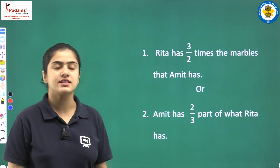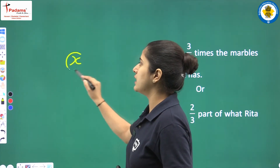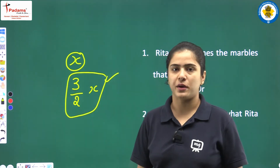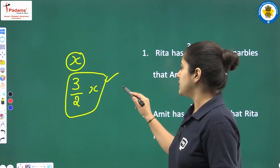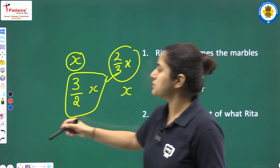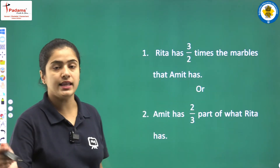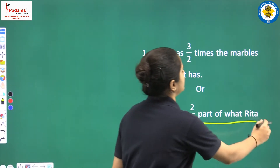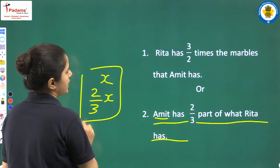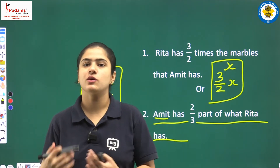Next example: Rita has three upon two times the marbles that Amir has. So if Amir has x marbles, then Rita has (3/2)x marbles. Conversely, if Rita has x marbles, then Amir has (2/3)x marbles. In this way, we can write different comparisons for the same relationship. Is tarah se hum different quantities ko compare kar sakte hain.